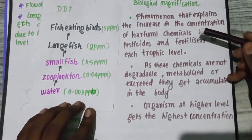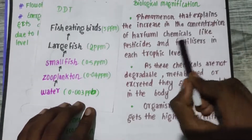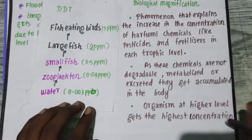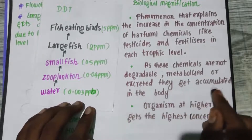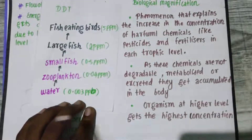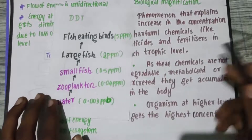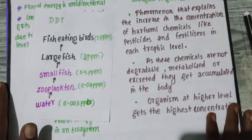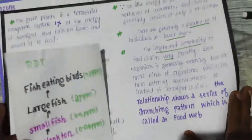Remember, biological magnification increases the concentration of harmful chemicals like pesticides and fertilizers at each trophic level. When the chemicals accumulate, they cannot be metabolized or excreted. At the higher trophic level, the concentration is the highest. This is what you have to know. We will meet you in the next video. Until then, bye-bye.